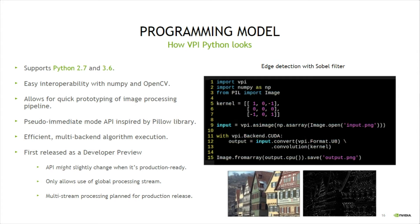Then on lines 11 to 13, the image is converted to grayscale and then convolved with a 3x3 Sobel kernel defined at the top. All algorithms are executed by the CUDA backend. Finally, on line 15, the output is written back to disk using Pillow.